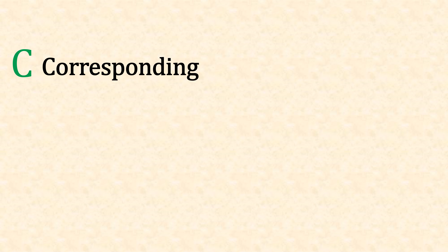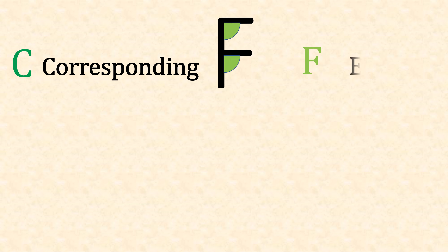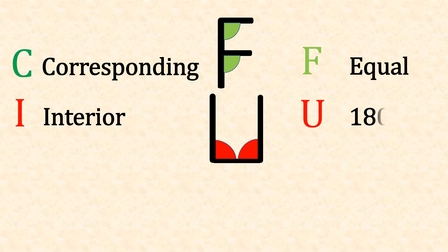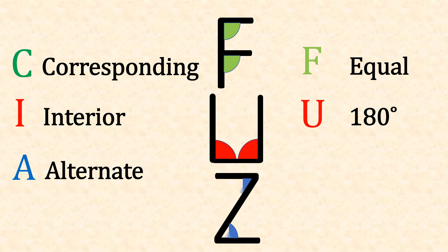For corresponding angles, they fit nicely into the letter F and they are both equal. For interior angles, they fit nicely into a U and they add up to 180. For alternate angles, they fit nicely into the letter Z and they both equal the same. So that gives us the mnemonic: F-U-Z, where C corresponds to F, I to U, and A to Z.